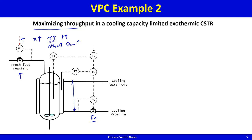We don't want reaction runaway, yet we want the reactor to process as much feed as possible to maximize revenue and plant viability. As an operator, the smart approach is to look at the coolant valve position: if it is only 50% open, you know you can put in more feed.